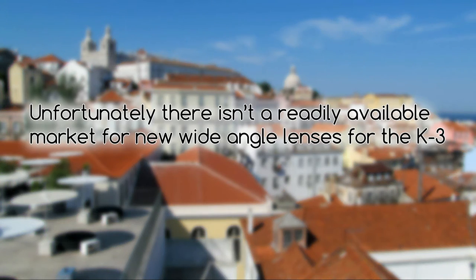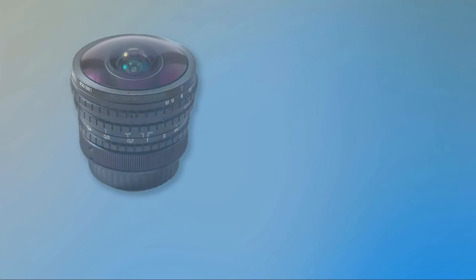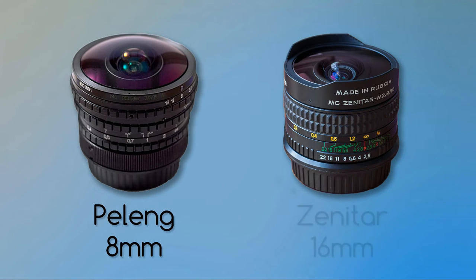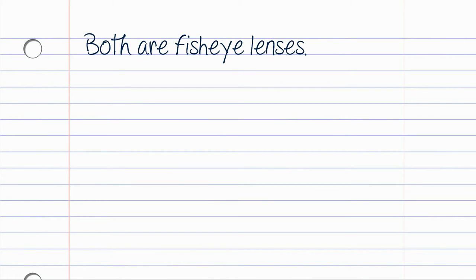Unfortunately there isn't a readily available market for new wide-angle lenses for the K3. You are stuck with two options: the Peleng 8mm focal length made in Belarus and the Zenitar 16mm focal length made in Russia. No official distributor exists outside the respective country, but you can find both easily on eBay, through Amazon, or from importers like NCS Products in New York, RUGIFT, and Eastwave Products, to name but a few. Both are fisheye lenses.